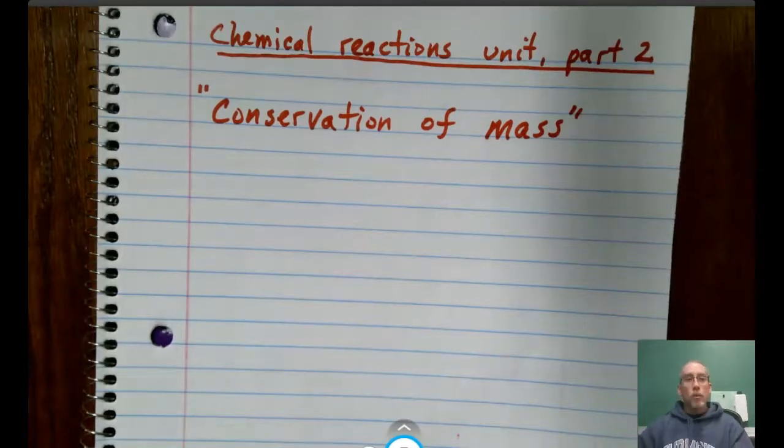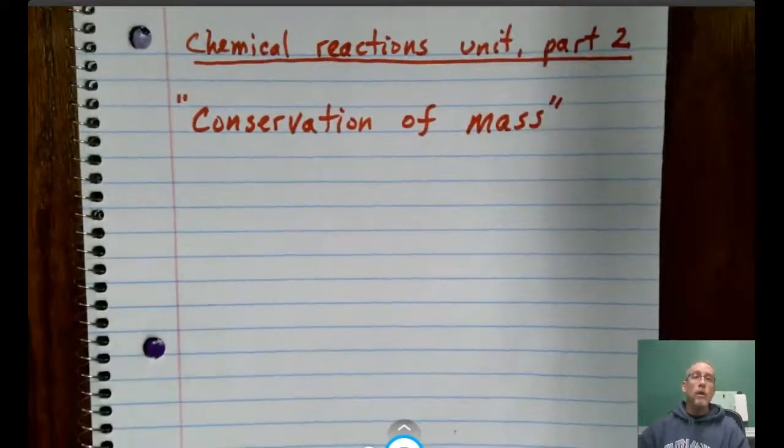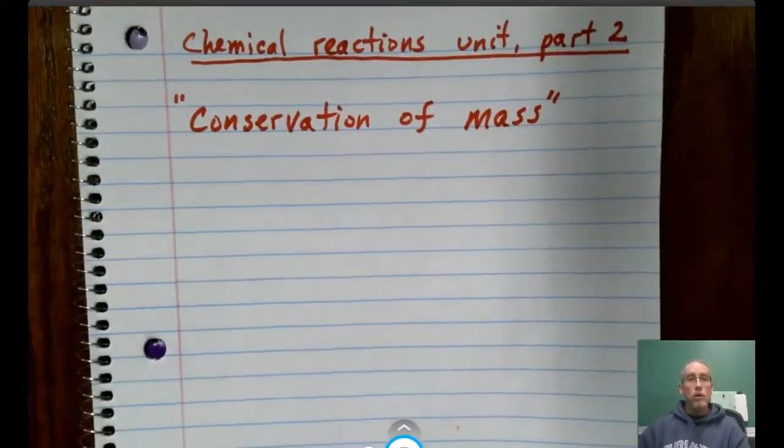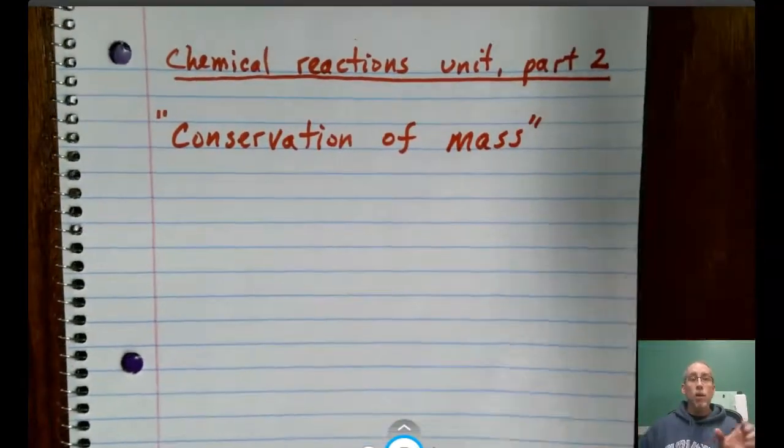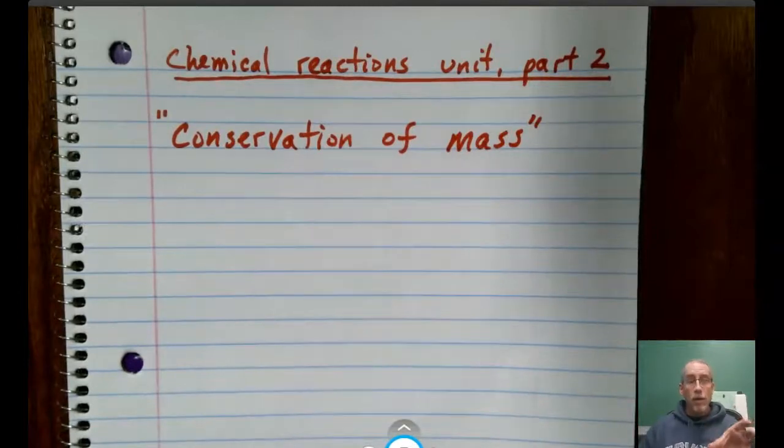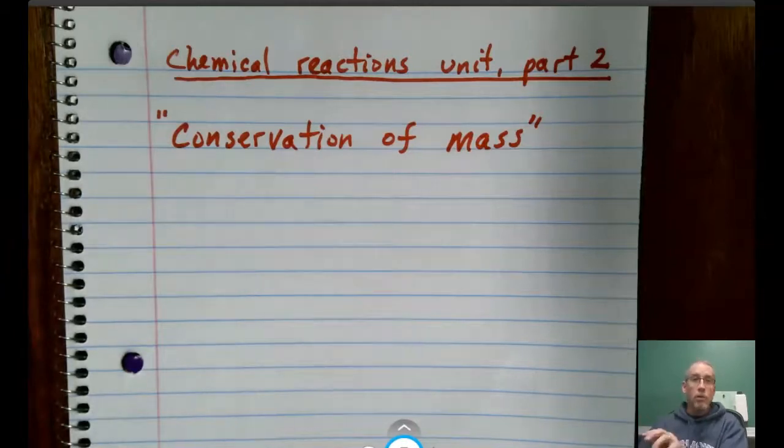And we also learned how to represent them using what's called a chemical equation. We saw that we can show that the reactants that we begin with before the reaction are changed into products after the reaction, and they'll look entirely different.